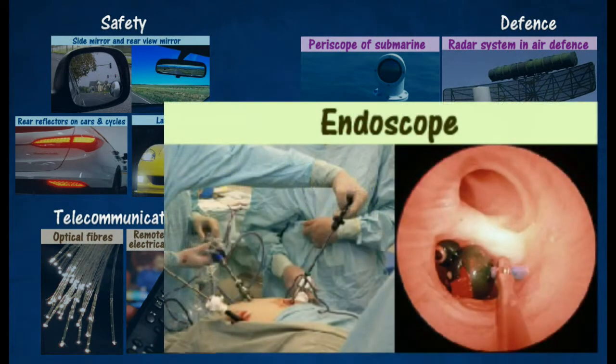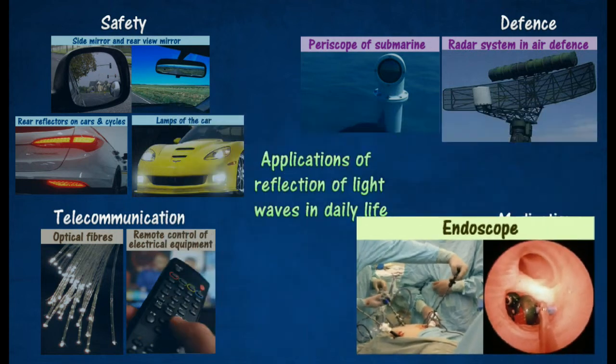An endoscope is used to examine the internal organs of patients. It is a narrow bunch of optical fibers with light put in at one end, experiencing multiple total internal reflections.